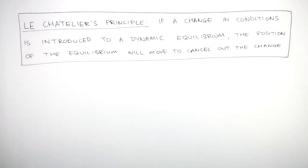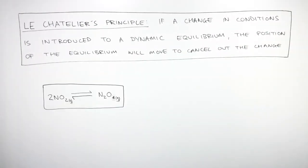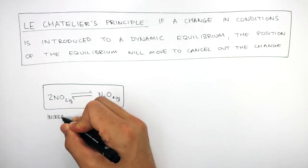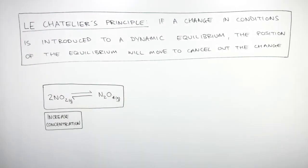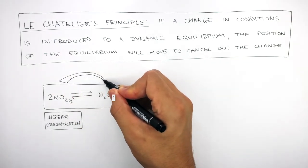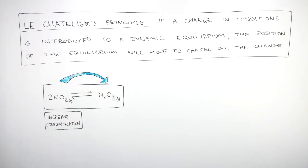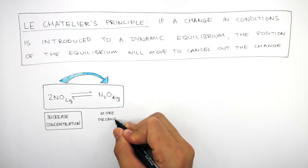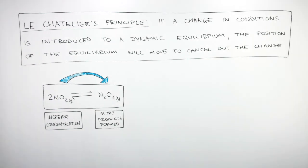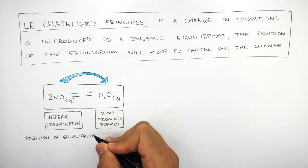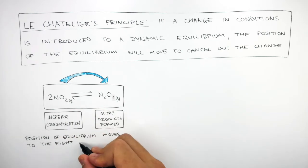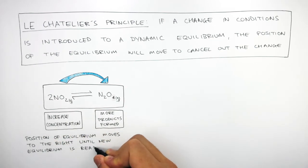To understand this in more detail, here is a reversible reaction between NO₂ and N₂O₄. If this reversible reaction is in a state of dynamic equilibrium and we increase the concentration of NO₂, this causes the rate of the forward reaction to increase, causing more products to be formed. Therefore, the position of the equilibrium moves to the right until a new equilibrium is reached.